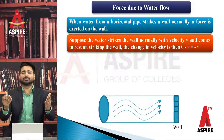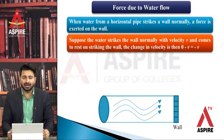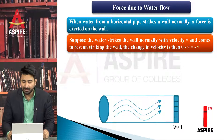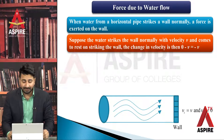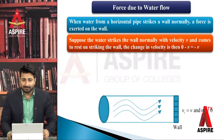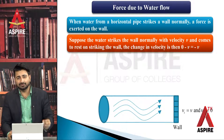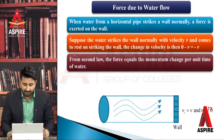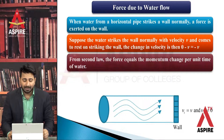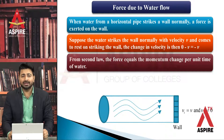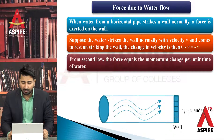If we ask about the change in velocity, the change in velocity is final velocity minus initial velocity. That would be minus V. We can imagine that the initial velocity is V and the final velocity is zero, so the change in velocity is minus V.